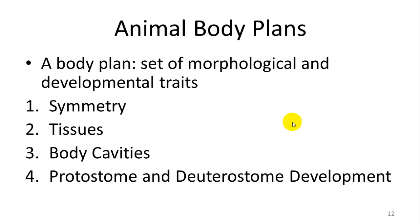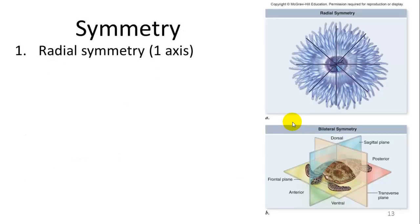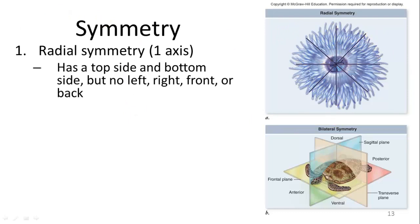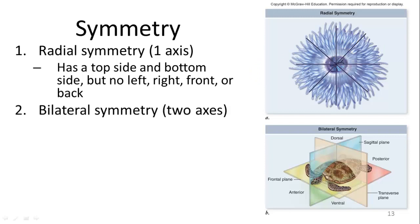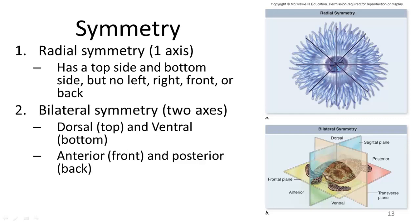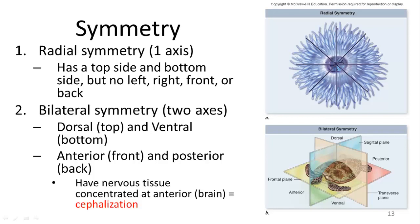First, symmetry. Radial symmetry has one axis — you can split it in multiple ways and still get equal halves. It has a top and a bottom but no left/right or front/back. A good example is a cnidarian or sea anemone. Bilateral symmetry has two axes: a dorsal and ventral side, and an anterior and posterior. These animals have nervous tissue centralized in the head region, which is what we call cephalization.